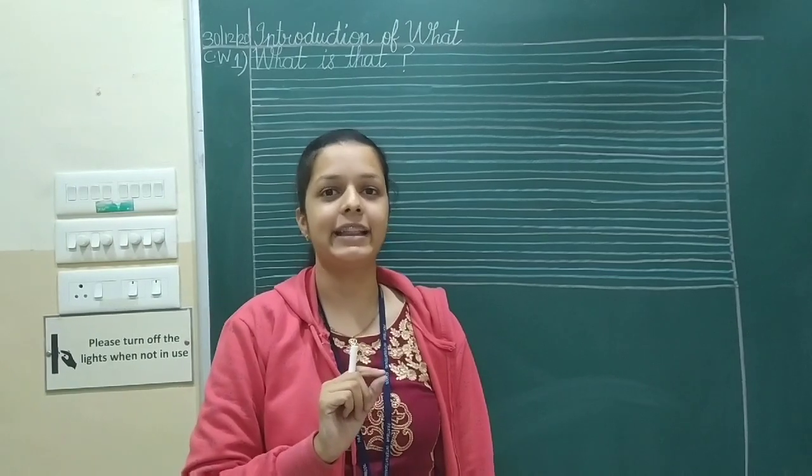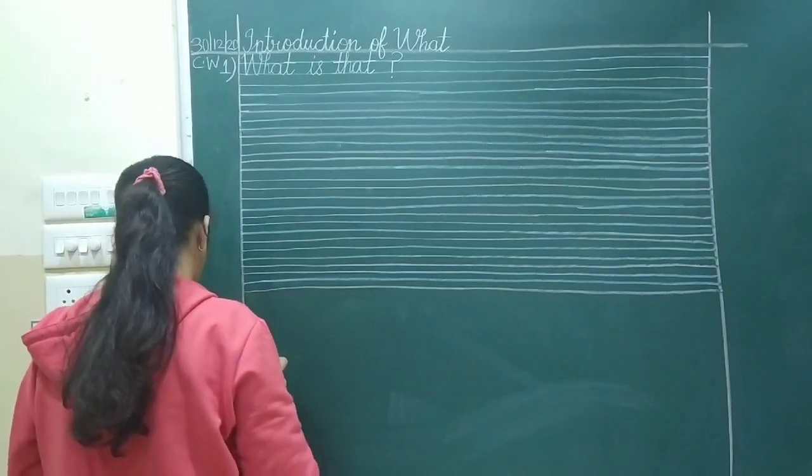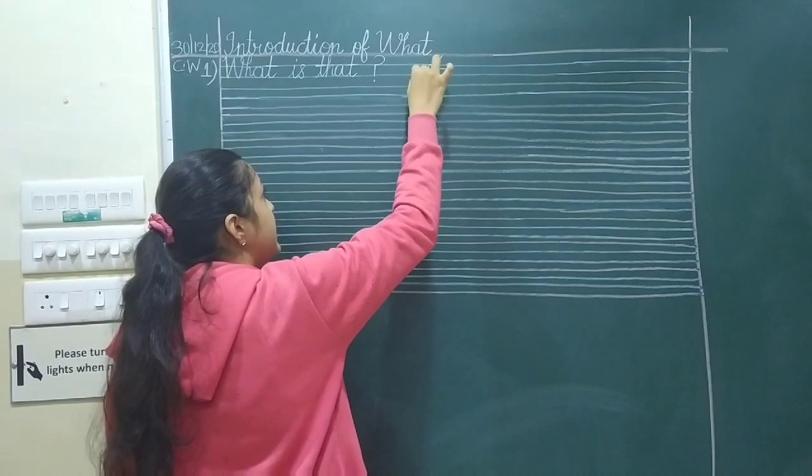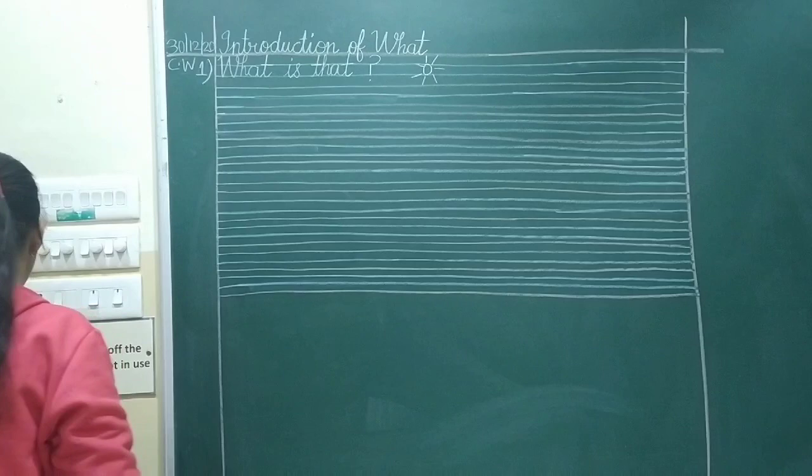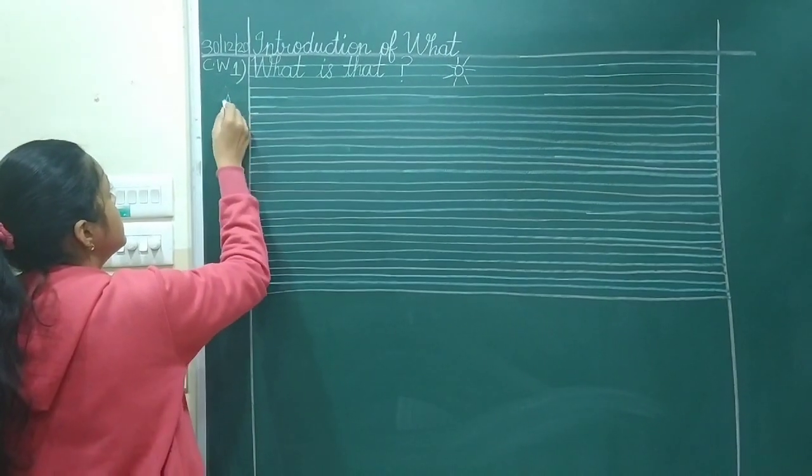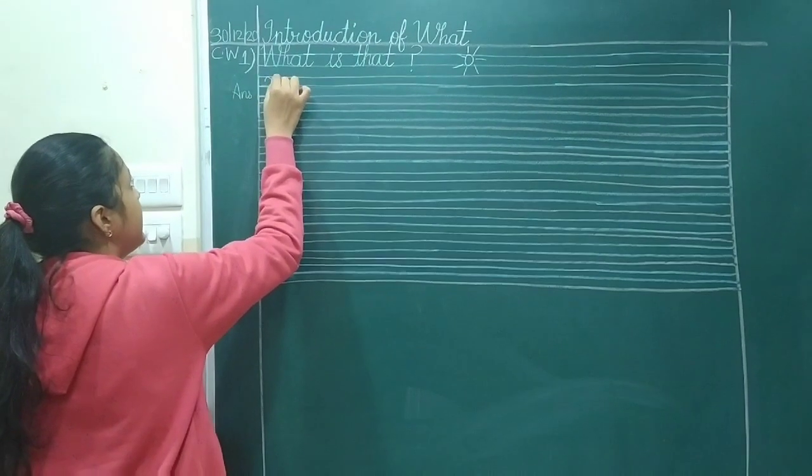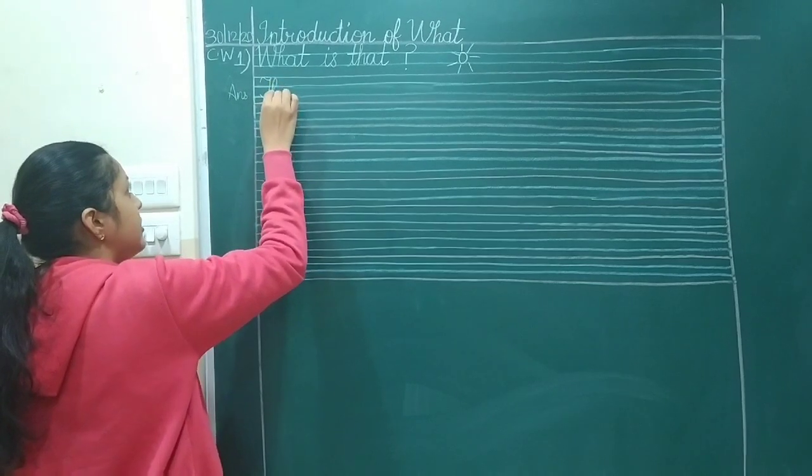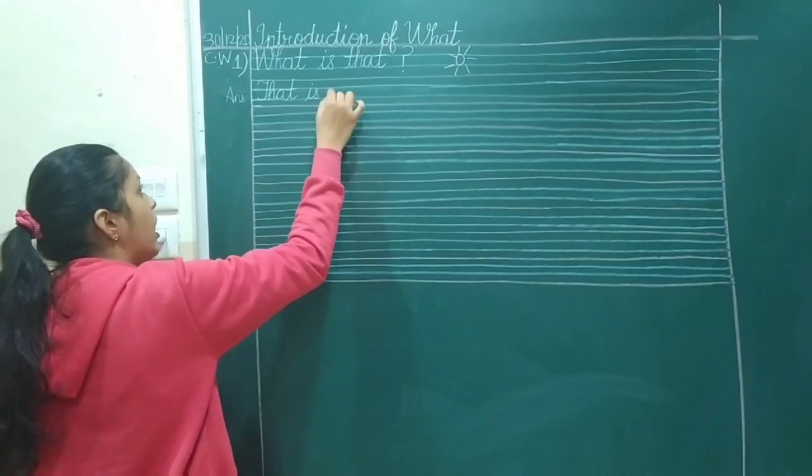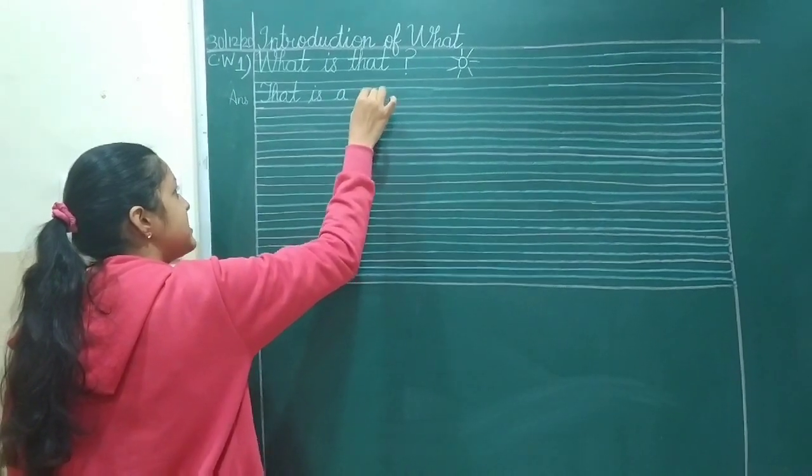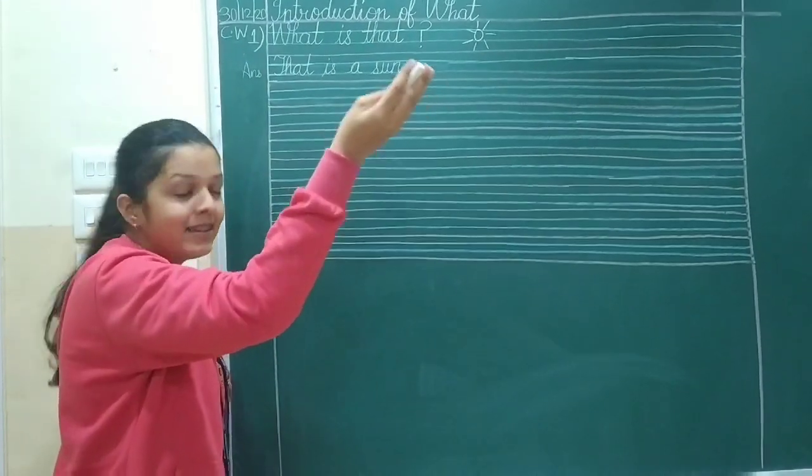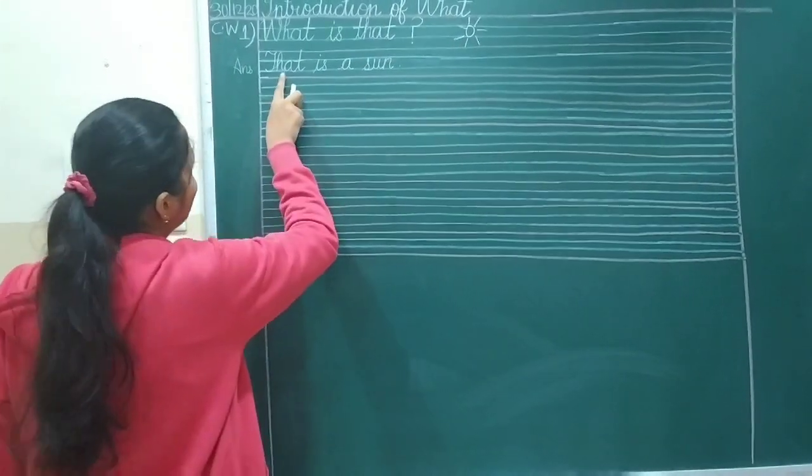We are going to draw sun. Okay. Sun picture you are going to draw. Now, sun is far away from us. Okay. So we are going to write here A-N-S answer. Okay. And we are going to write capital cursive T that is a sun. S-U-N, sun. What is that? That is a sun.